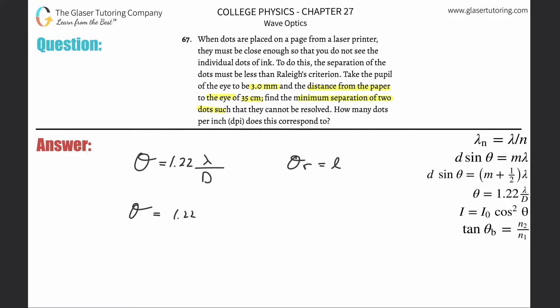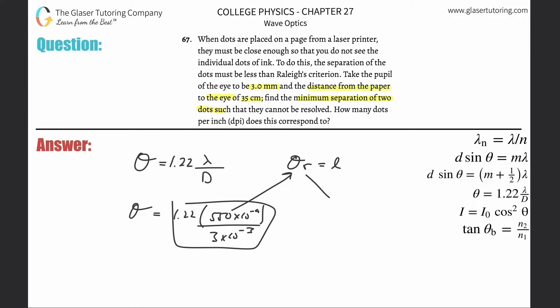So this is going to be 1.22 multiplied by the wavelength — the average wavelength is about 550 times 10 to the minus ninth meters — then divide that by the diameter of the pupil. This is 3 millimeters, so just take that and multiply it by 10 to the minus 3. Then we take this value and plug it in for theta. The R value, the distance between the person and the paper, is 35 centimeters, so that's 35 times 10 to the minus 2. Just plug it all in to find L: 1.22 times 550 times 10 to the minus ninth, divided by 3 times 10 to the minus third, multiplied by 35 times 10 to the minus 2.